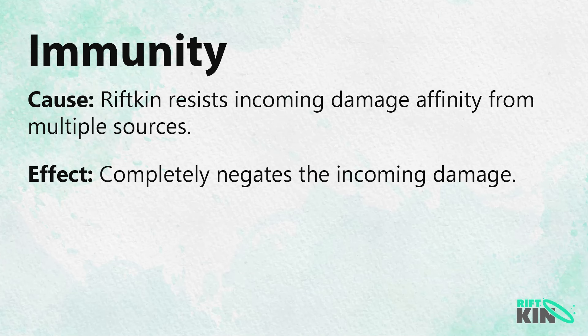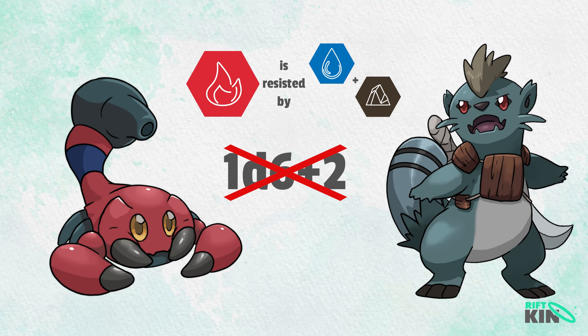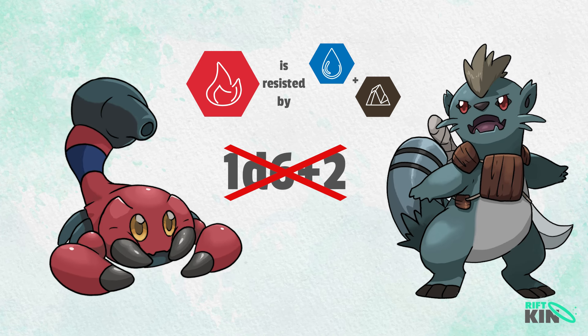Immunity! Immunity is a complete negation of damage from a certain affinity. It is gained by having multiple sources of resistance to that affinity. If our example aquatter were instead the water and earth affinity camouflage, our pinch blaze's fire damage would be entirely nullified, as both water and earth affinities resist fire.